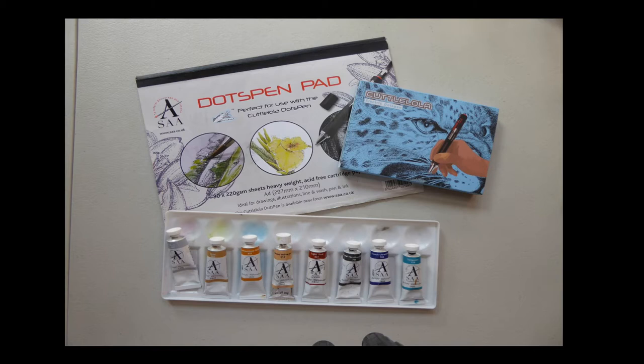This is the materials that I'm going to be using. I'll be working with the Cataola Dots pen, which I'll show you in more detail in a minute. The Dots pad, which is a really beautiful heavyweight cartridge paper, and some SAA watercolors. They'll be going on at the end and I'll tell you what colors I use as I use them.